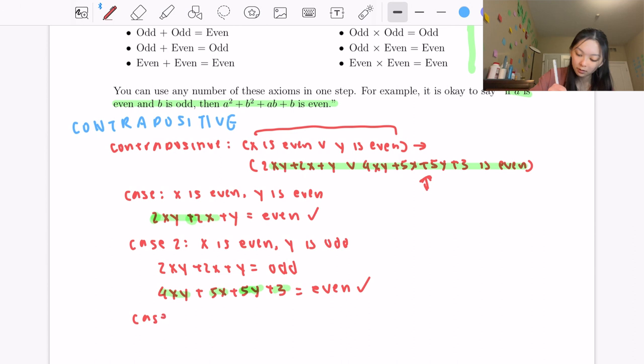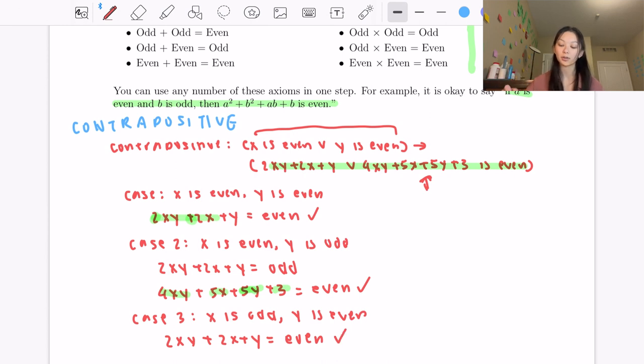Now for our final case, case 3, let's suppose x is odd and y is even. So in this case 2xy + 2x + y, once again since y is even, this entire equation is going to evaluate to even, and once again we've proven this.